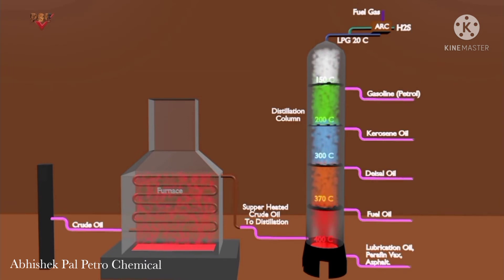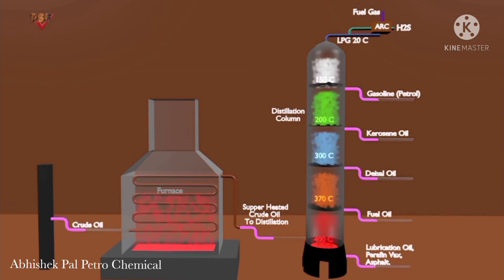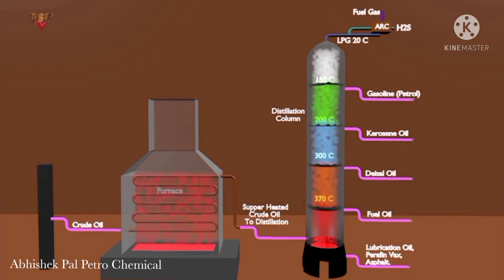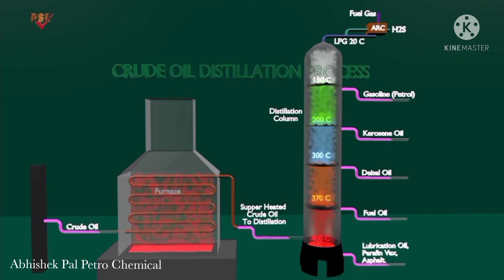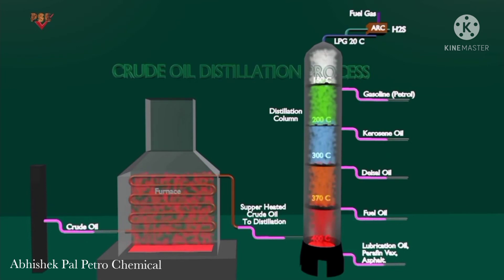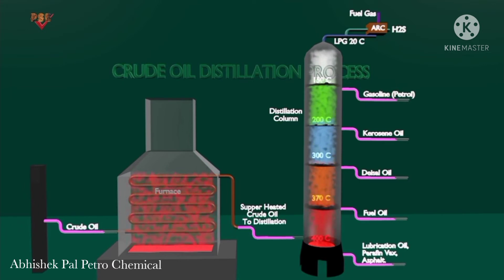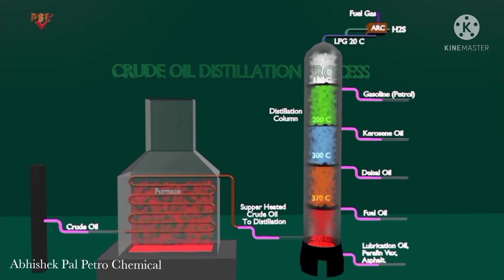Products from the distillation tower range from gases at the top to very heavy, viscous liquids at the bottom. In all cases, these product streams are still considered unfinished and require further processing to become useful products.